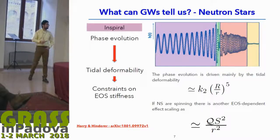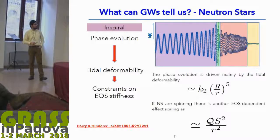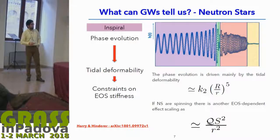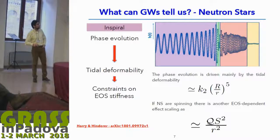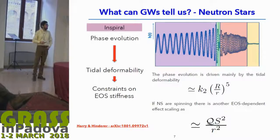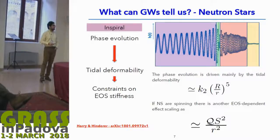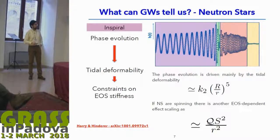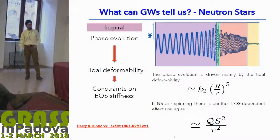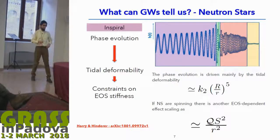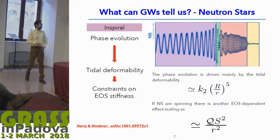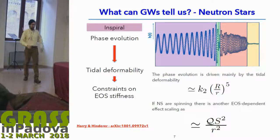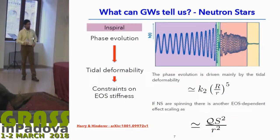The phase evolution is driven mainly by the tidal deformability, where k2 is the tidal Love number of the equation of state, R is the radius of the neutron star, and r is the orbital separation of the two neutron stars. If the neutron stars are spinning, the phase evolution will also be driven by another equation-of-state-dependent effect scaling as 1/r², which dominates at large orbital separation. Here, Q is a parameter describing the quadrupolar deformation of the neutron stars, and s is the spin parameter. This effect dominates over tidal deformability at large distances, while tidal effects become important only at smaller orbital separations.